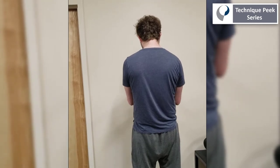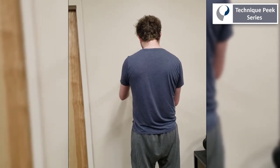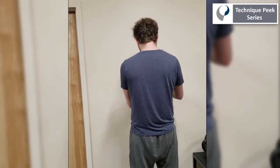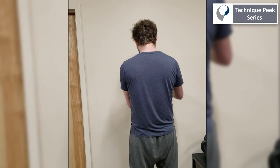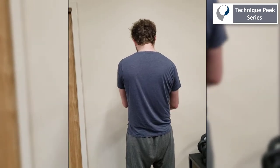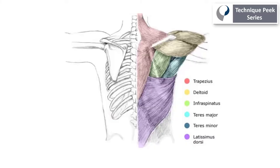He could also use some postural retraining. As we can see, his scapula are very protracted. But this is just an example of an important point: you need to ensure proximal stability to achieve distal mobility with all conditions.